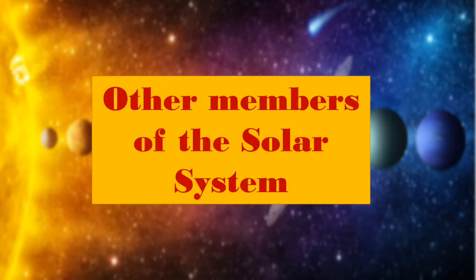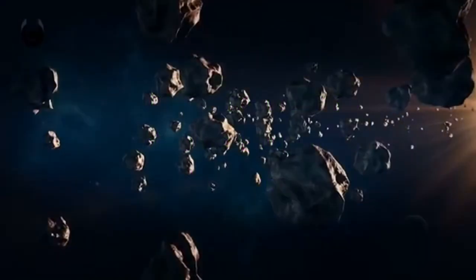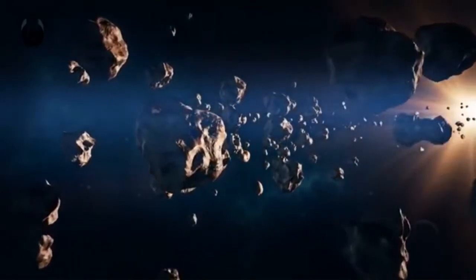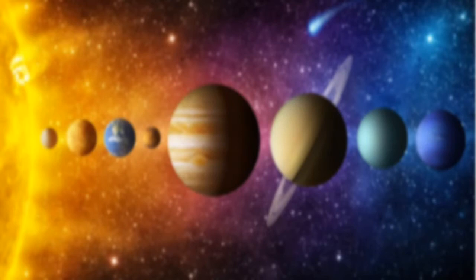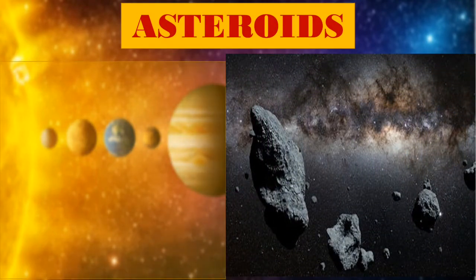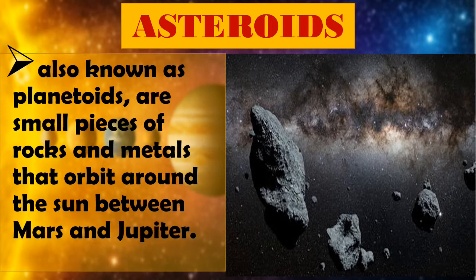Other members of the solar system. Asteroids, also known as planetoids, are small pieces of rocks and metals that orbit around the Sun between Mars and Jupiter.